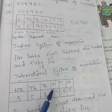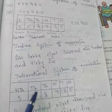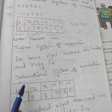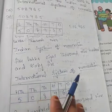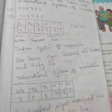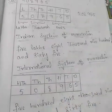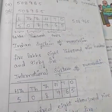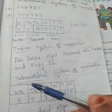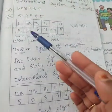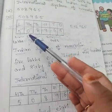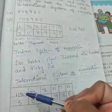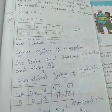Ones, tens, hundreds, thousands, ten thousands, and hundred thousands. This is the international system of numeration place value chart. The slight difference is that after ten thousand, in the Indian place value chart we go with lakhs, but here we go with hundred thousands.